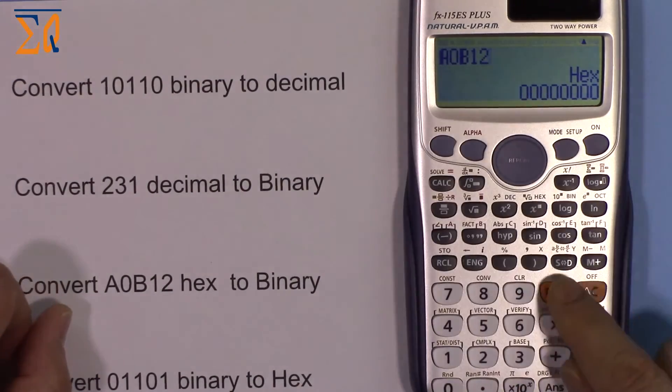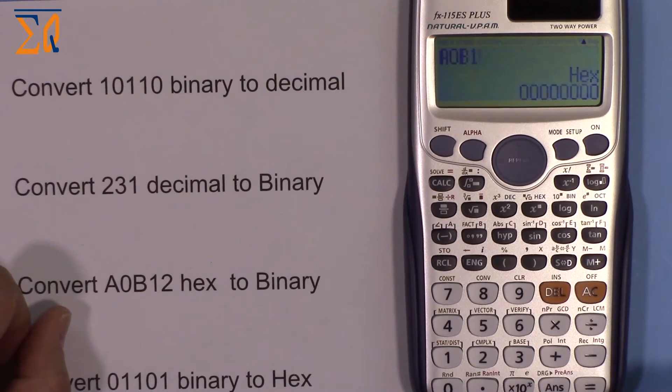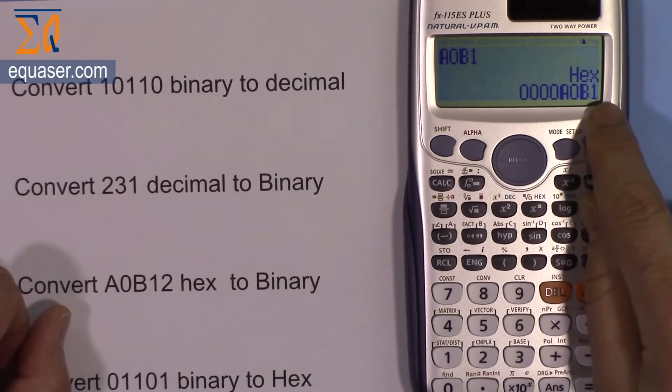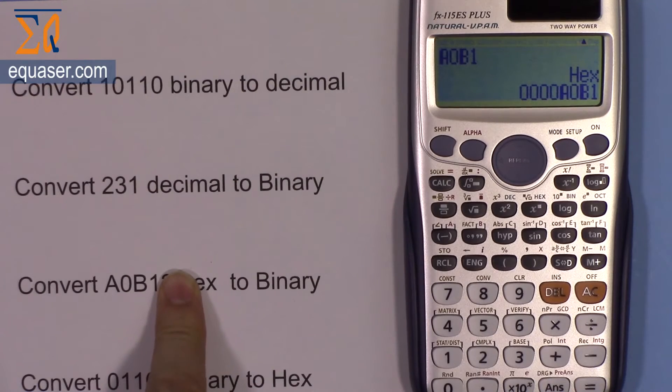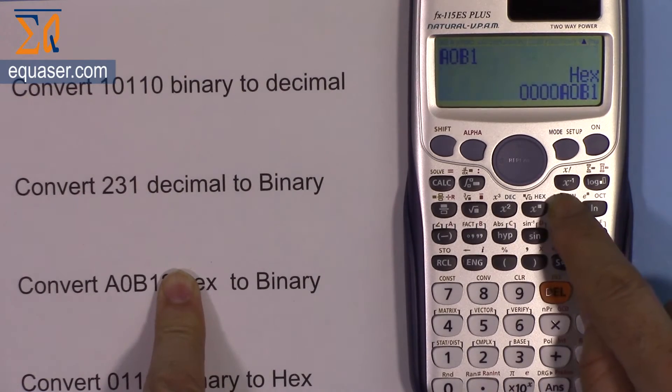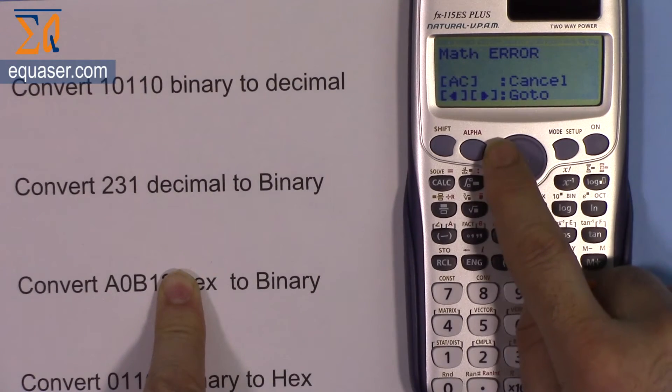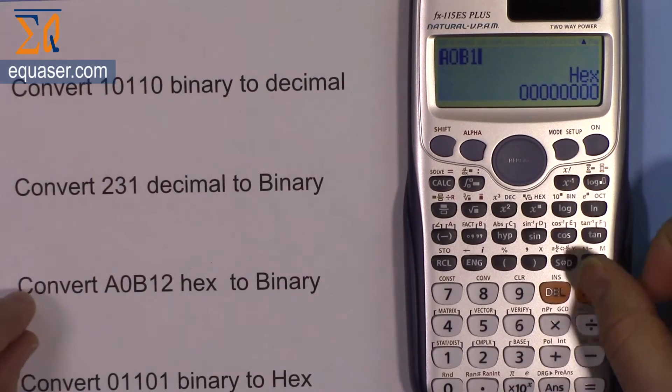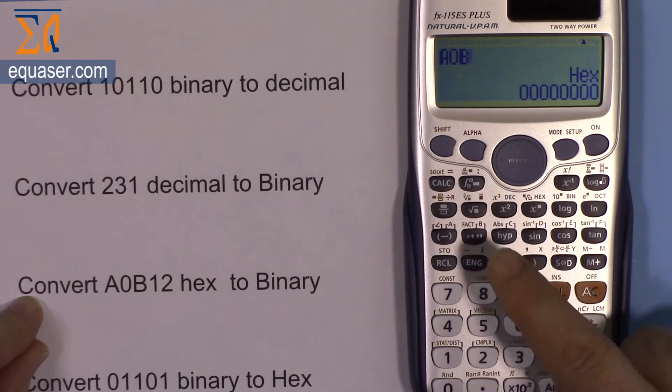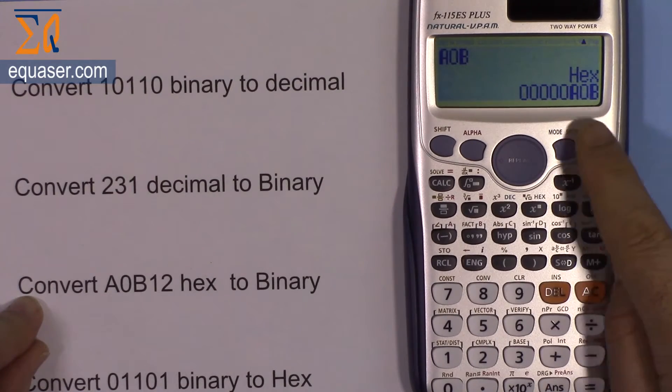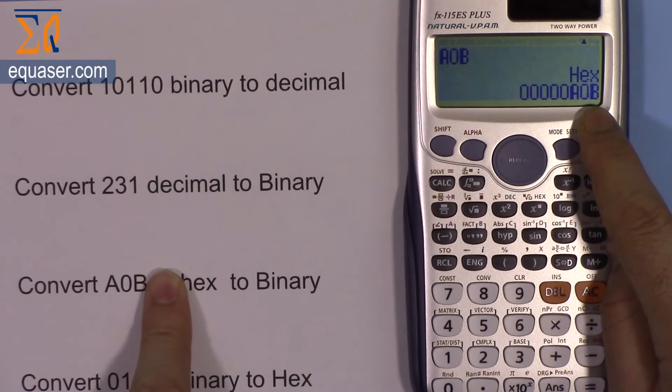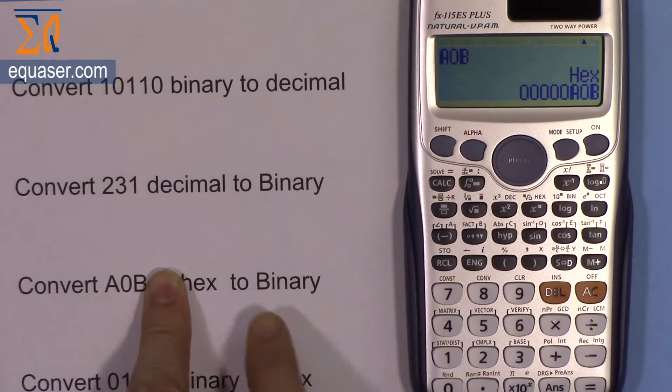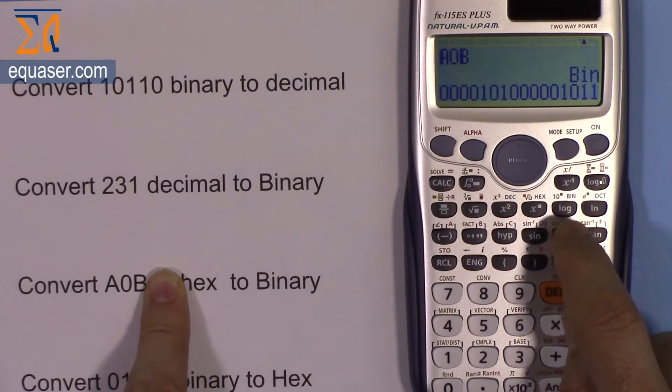Now A0B1, equal sign, then convert to binary. Still too large. Removing one more digit, so A0B, equal sign. Now converting to binary works. That is the binary value of A0B hex.